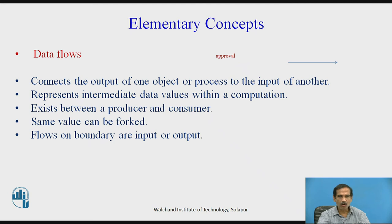The next concept is a data flow, represented as a directed arrow — like an approval of a loan, shown on the right-hand side. It connects the output of one object to the input process of another and represents intermediate data values within a computation. It exists between the producer, who is requesting, and the consumer, which will be given the particular item. The same values can be forked at any time, and there are flows at the boundaries which are input or output.